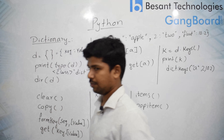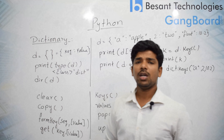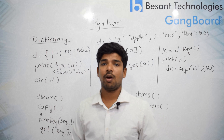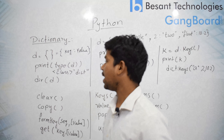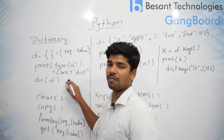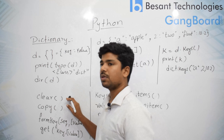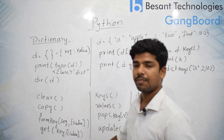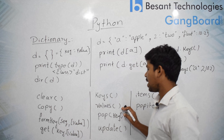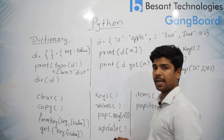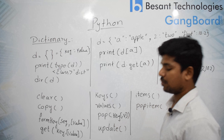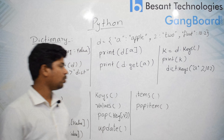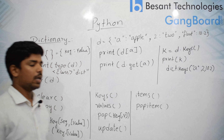It will give you 'class dict'. In order to check the methods that are available along with the dictionary object, you can use dir(d). It will give you: clear, copy, fromkeys, get, keys, values, pop, update, items, and popitem.